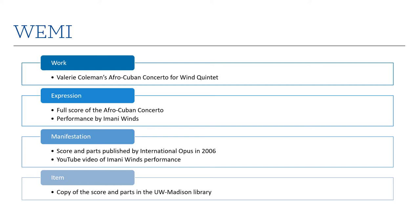The work and expression are fairly abstract concepts. The work refers to the piece — the work of literature or music or whatever the library is dealing with — as it exists in an abstract form, as an idea. The sort of idea we invoke when we refer to a piece like Valerie Coleman's Afro-Cuban Concerto for Wind Quintet. We're talking about that general idea of what that piece is rather than any particular item.